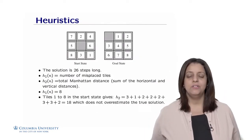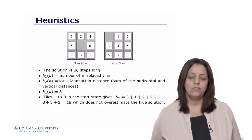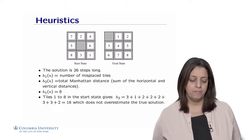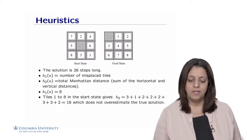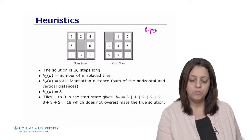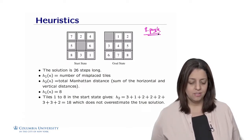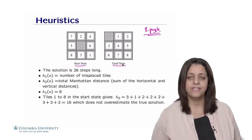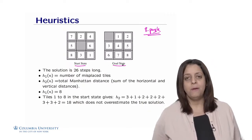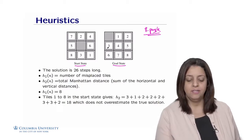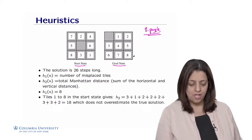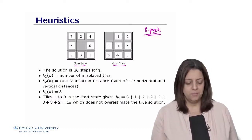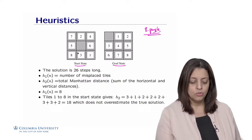Heuristics apply in contexts beyond maps. Consider the 8-puzzle problem, where you have a board and need to move tiles around to reach a goal state — tiles numbered 1 to 8 moved up, down, left, and right until arranged in increasing order. For this specific puzzle configuration, the optimal solution from the start state to the goal state takes exactly 26 steps — that is the true optimal cost.